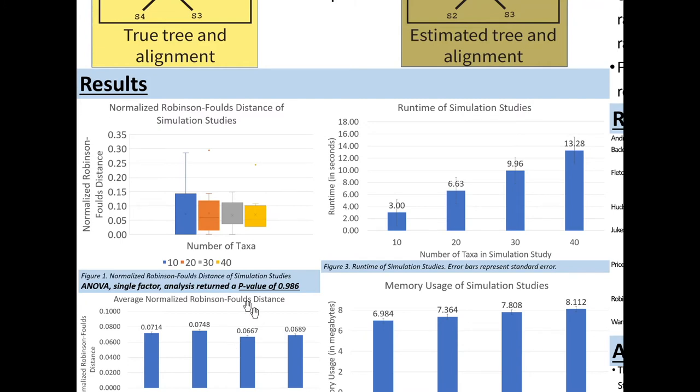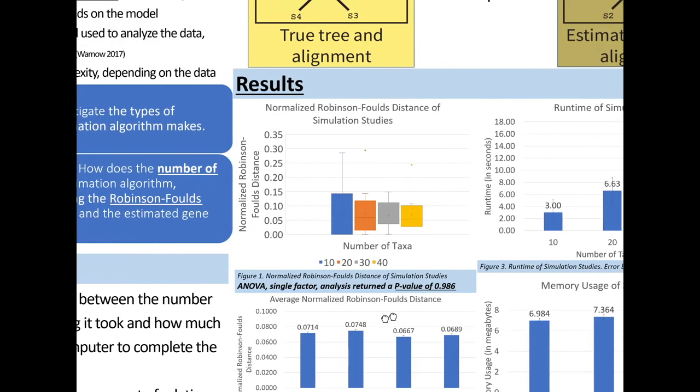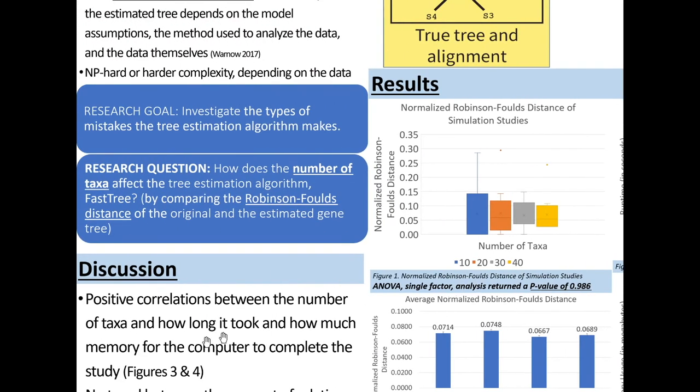I ran an ANOVA of all the data and the ANOVA p-value of 0.98 also reiterates the fact that there is no trend between the amount of relative error and the number of taxa.